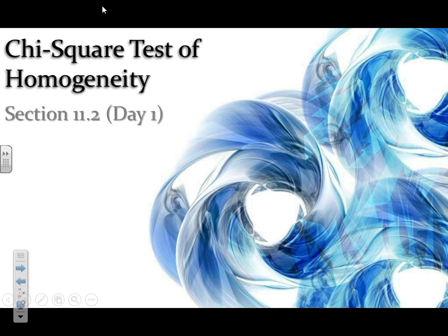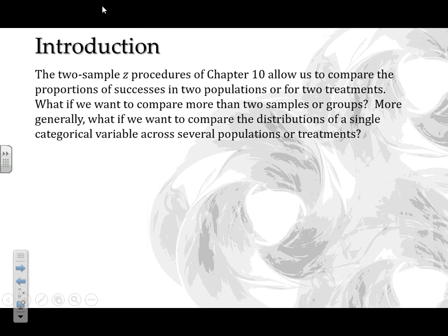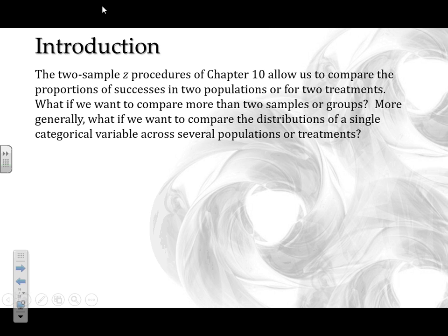Today we're going to talk about a second type of chi-square test called the chi-square test of homogeneity. This is essentially an expansion of our two-sample z procedures. In chapter 10, when we looked at the differences of two proportions, we ran a two-prop z test to find our p-value and determine if there was a difference. What we're doing now is expanding that to multiple groups — comparing more than two samples at a time, maybe three or four.